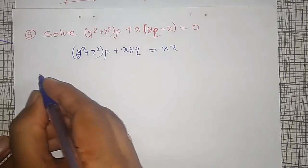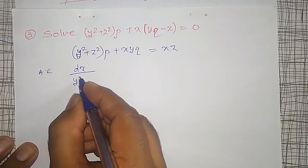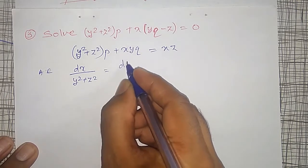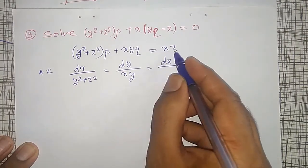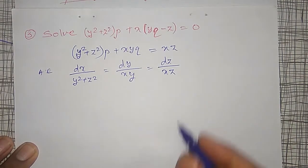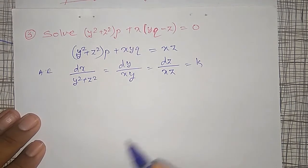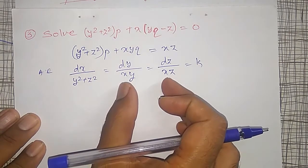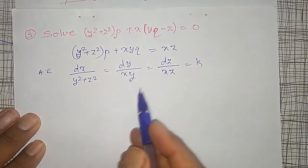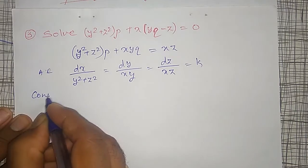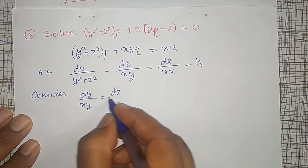The auxiliary equation is given by dx/(y² + z²) = dy/(xy) = dz/(xz). These ratios must all equal some constant k. Considering any two that are integrable, the first two and first-third pairs are not possible, therefore I will consider the last two.